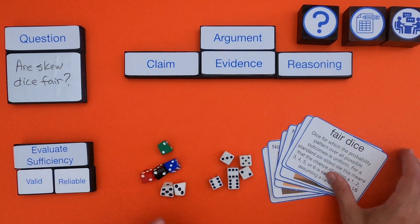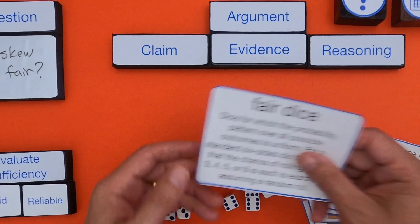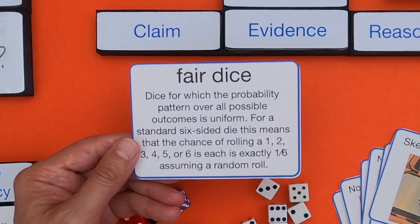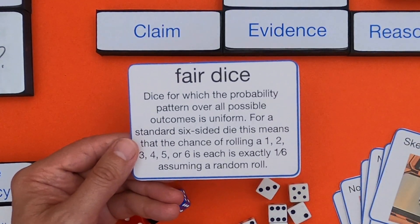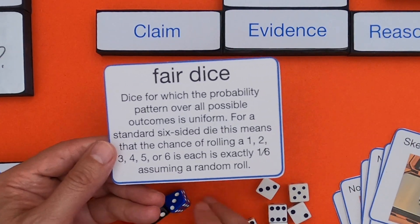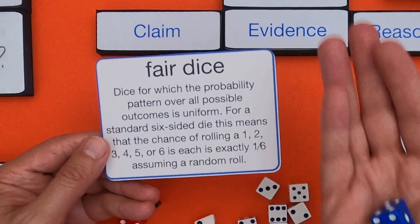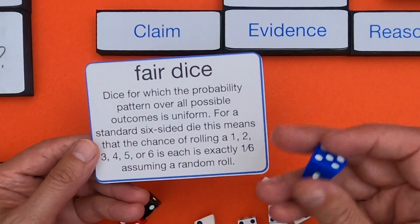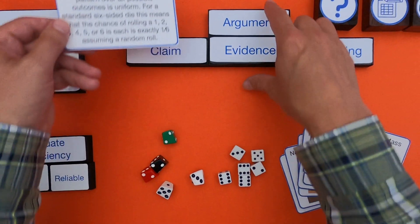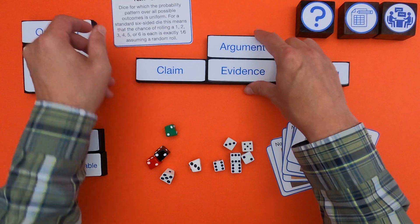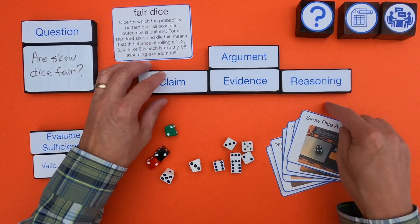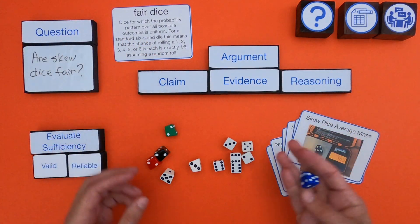The first thing I would do is look at the definition. Fair dice are dice for which the probability of a particular outcome over all possible outcomes is uniform. For a standard six-sided die, that means the chance of getting a one, two, three, four, five, or six is exactly one-sixth. That definition is going to be really important when we get to our reasoning.